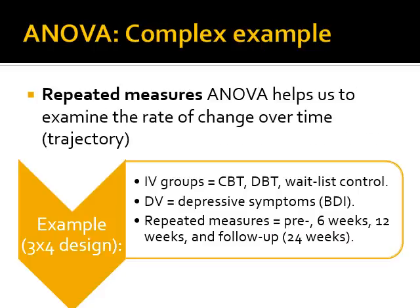Repeated measures ANOVA helps us examine the rate of change over time, known as the trajectory of change. This is the emerging model of research in the counseling field — understanding not only whether one therapy is more effective than another, but what kinds of rates of change occur. Does a person get well more quickly in one treatment but then plateau, or does another treatment result in slow, gradual progress that results in more improvement over time? Repeated measures ANOVA helps us with this.